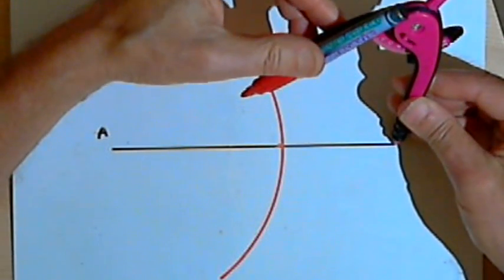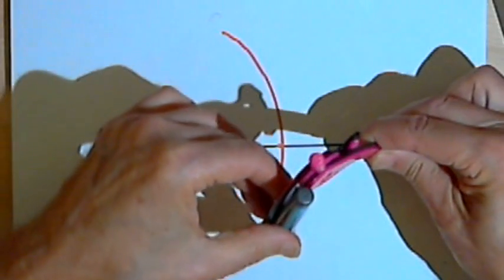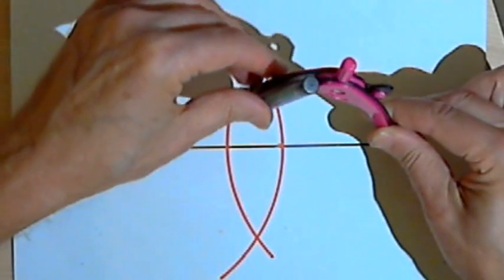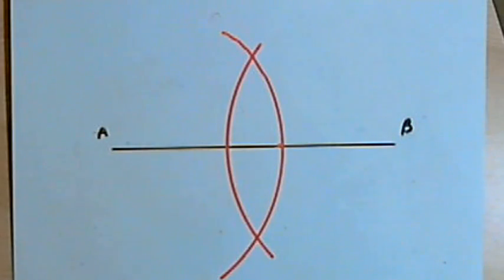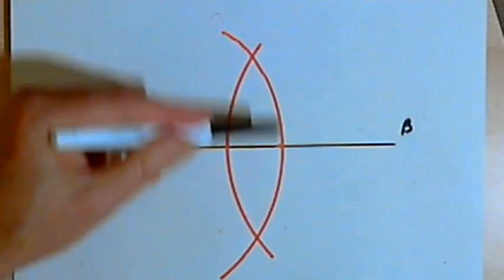Without changing the compass setting, I'm going to move it to point B and draw another arc that goes through the line segment and also intersects the first arc in two places.